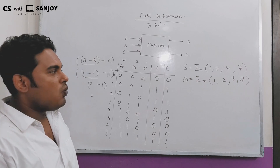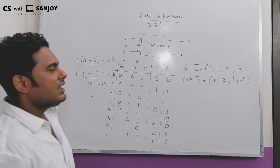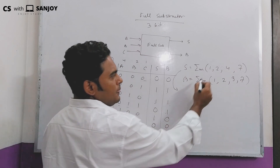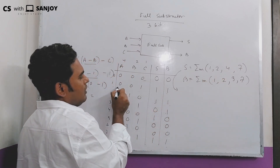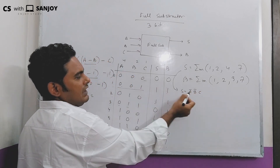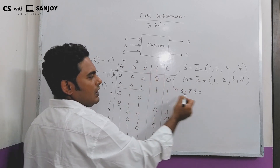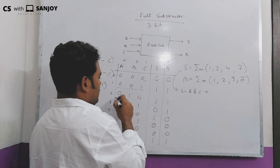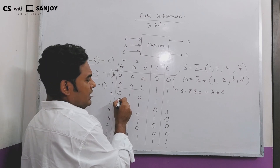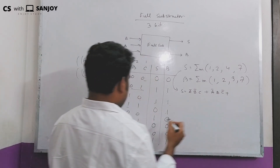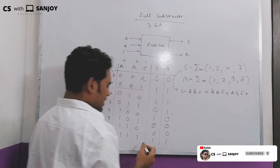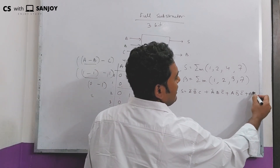So let's see the expressions. The total Boolean SOP expression uses minterms 1, 2, 4, 7: that gives us A-bar B-bar C, plus A-bar B C-bar, plus A B-bar C-bar, plus A B C.